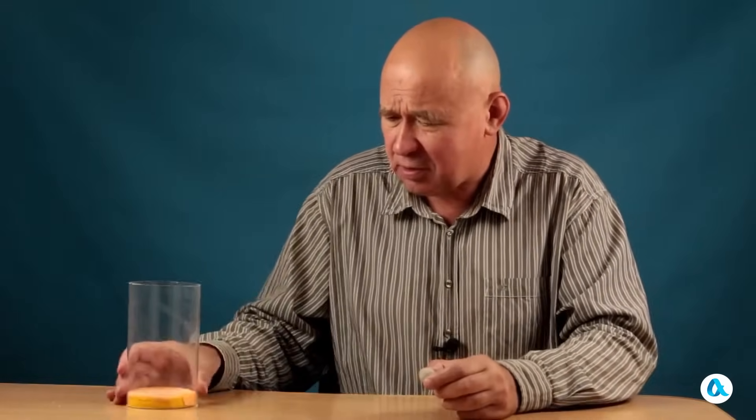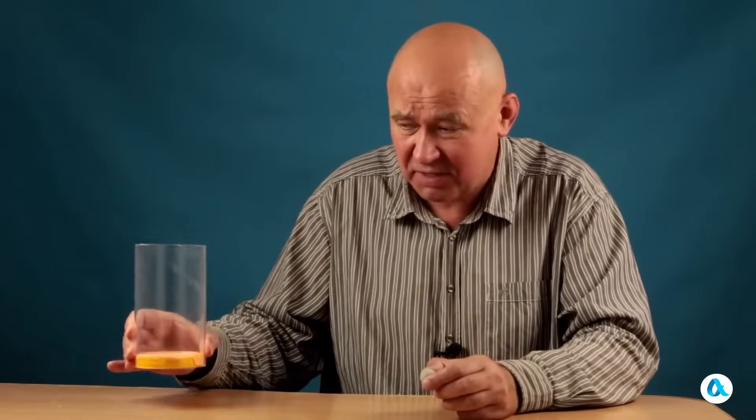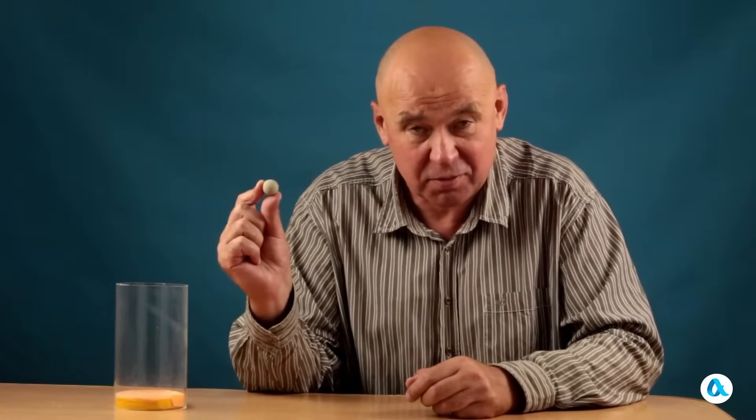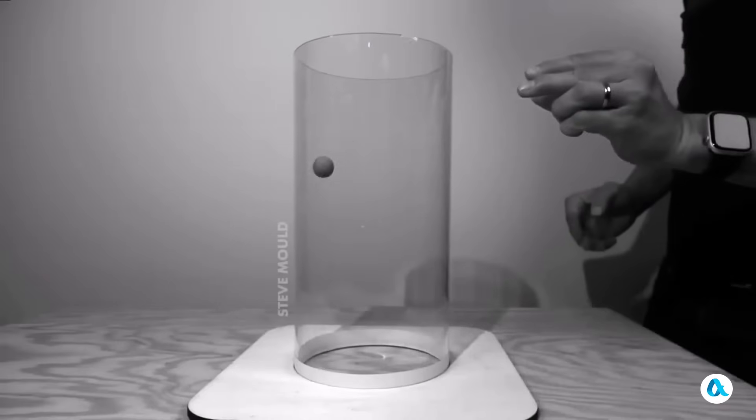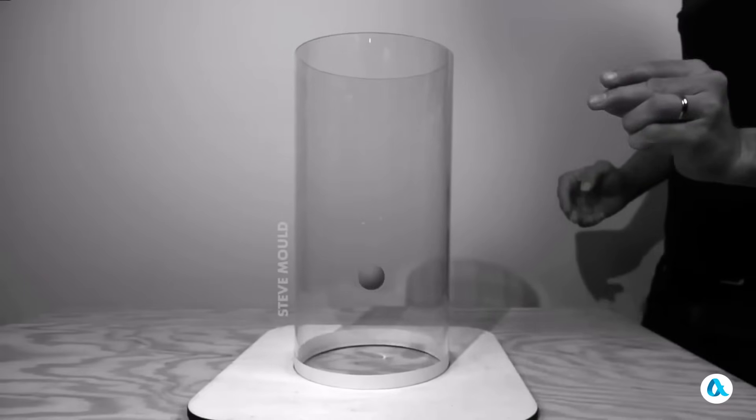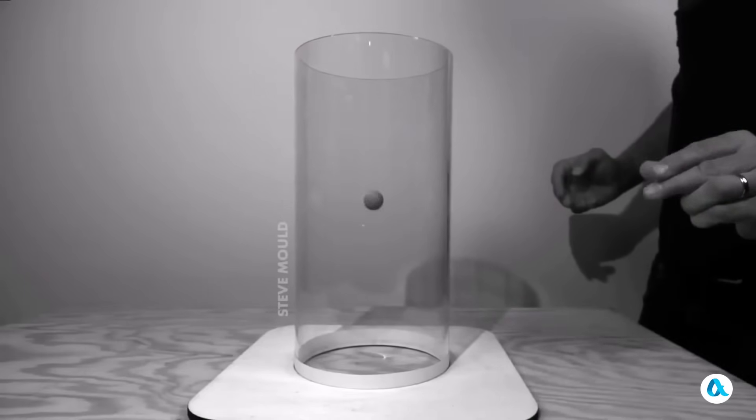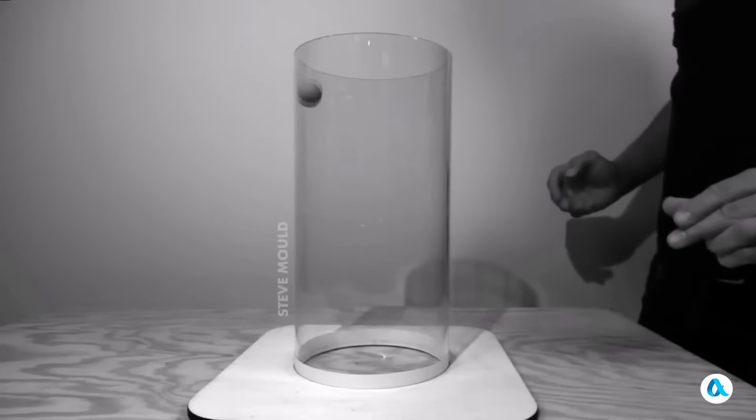For the experiment, a cylinder is needed. It's best if the cylinder is transparent so we can see what's happening inside, and a ball that will be thrown inside the cylinder. The best fit is a ball from an old computer mouse. Steve throws the ball at an angle into the cylinder. It drops down, but then it turns around, spirals up and flies out.